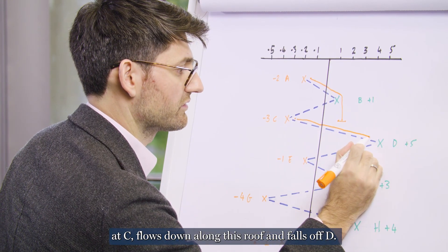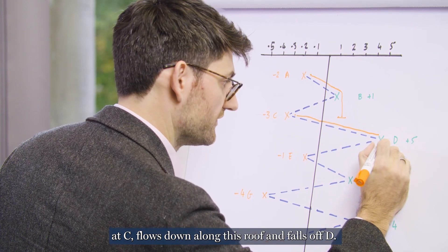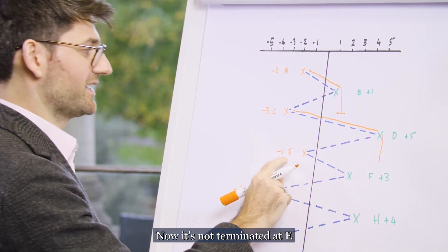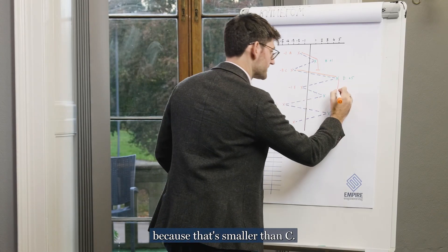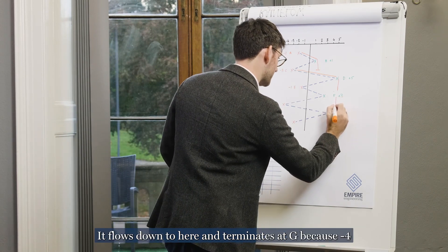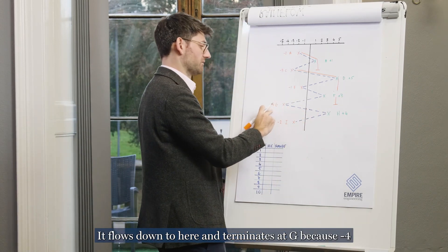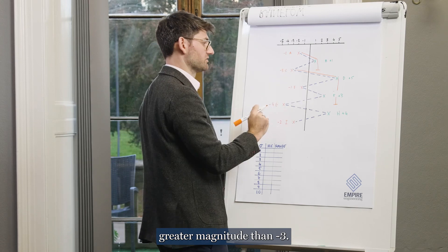Our next bit of rain starts at C, flows down along this roof, falls off D. Now it's not terminated at E because that's smaller than C. It flows down to here and terminates at G because minus four greater in magnitude than minus three.